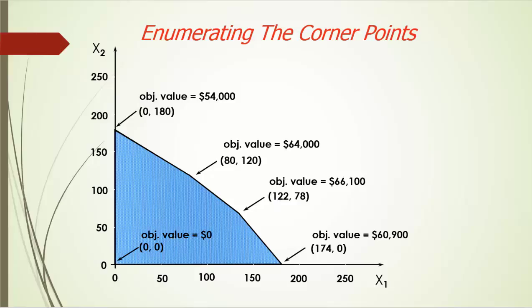To wrap it up, let me ask you a question: what if two corners give you the same amount of profit, and this profit turns out to be the highest possible? In this example, what if the unit profit of AquaSpa is also $300 instead of $350, with everything else being the same? What can you find?